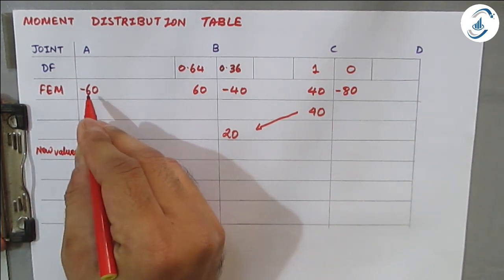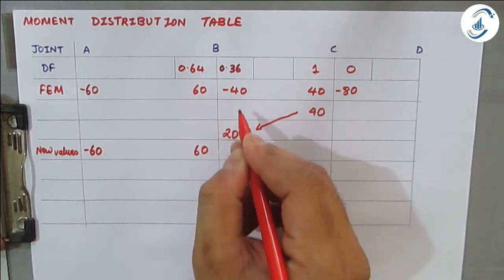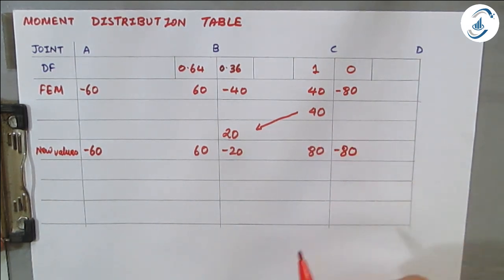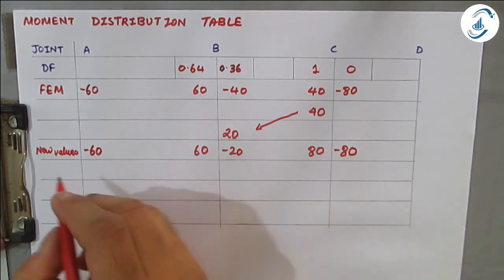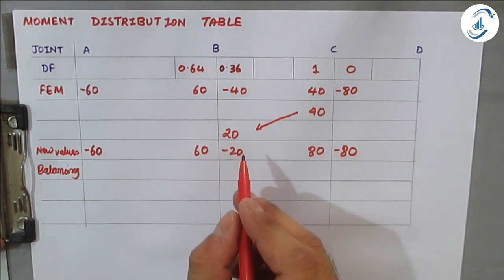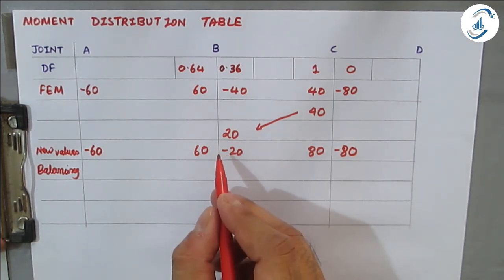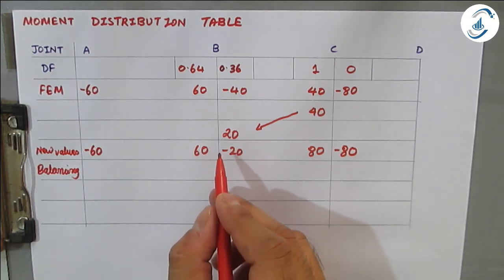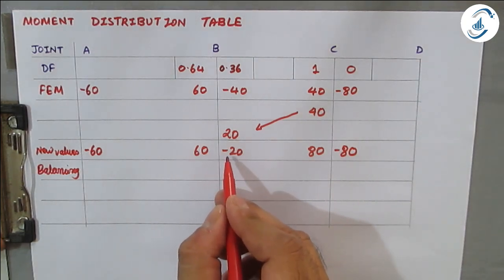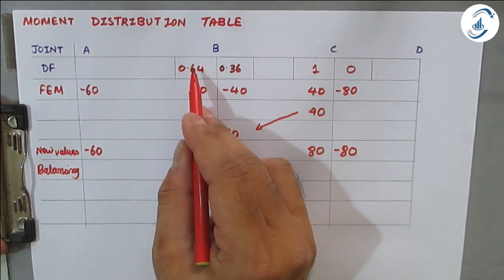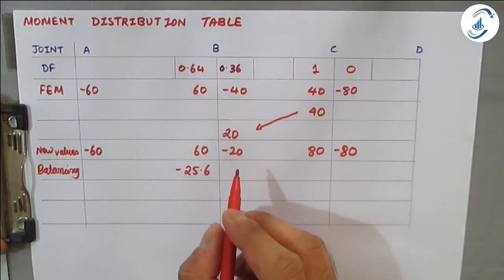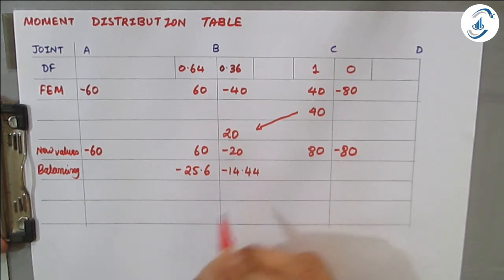Writing new values: AB = −60, BA = +60, BC modified to −20, CB = 80, CD = −80. At joint B, the unbalanced moment is 60 − 20 = 40, so we apply −40. Distributing: −40 × 0.64 = −25.6 for BA, and −40 × 0.36 = −14.4 for BC.